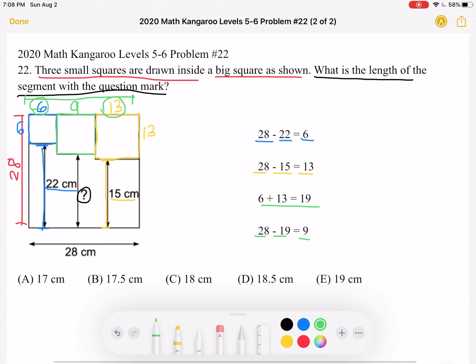So, like we said earlier, we can find the question mark because we know that the question mark plus the side length of the green square, which we found is 9, must be equal to 28.